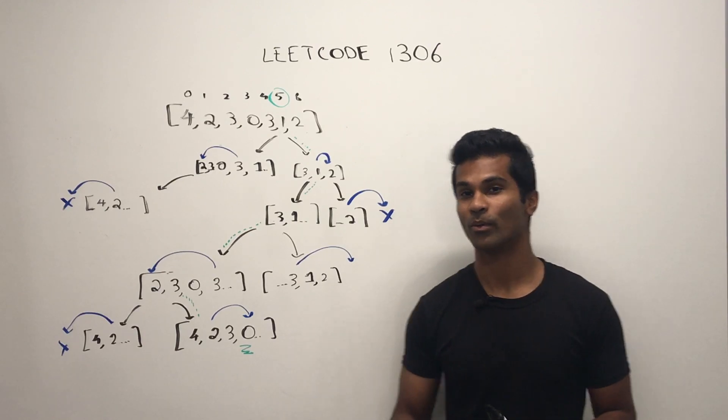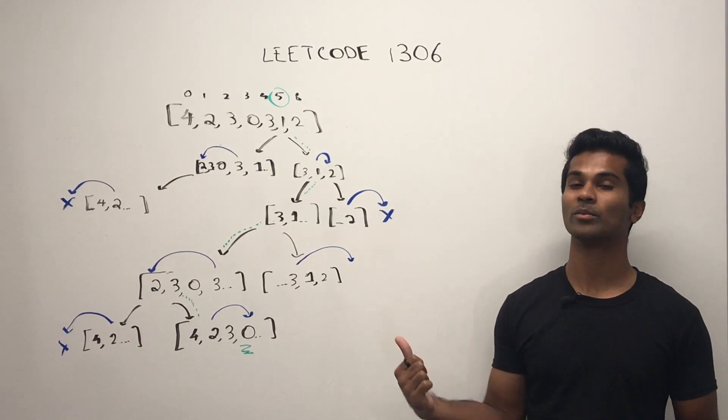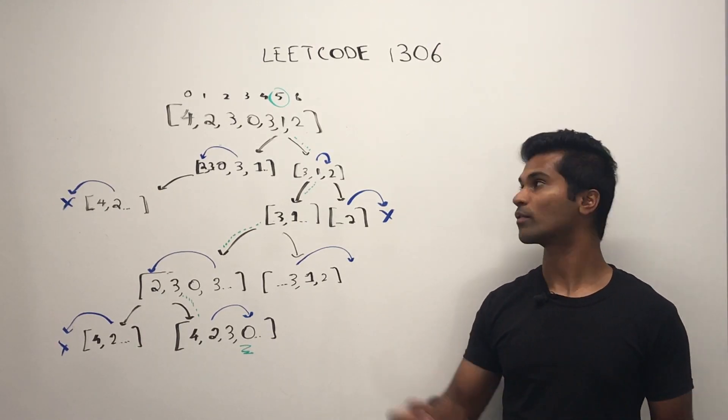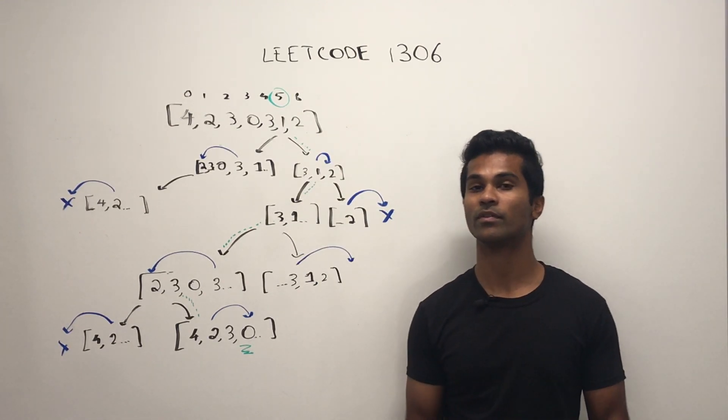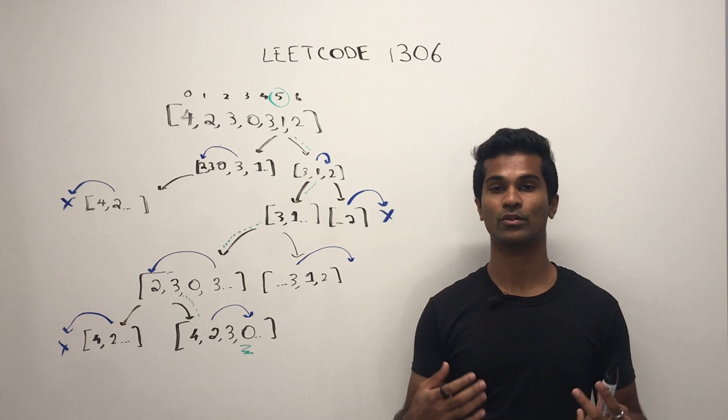Okay, cool. So I drew out the decision tree for this problem. Let's see what would happen if we start from five and then try jumping to the left or right and check if we can finally reach an index whose value is zero.